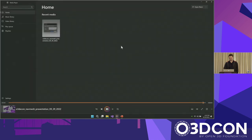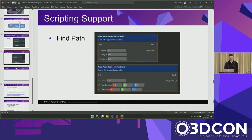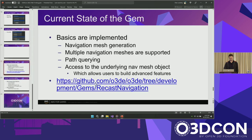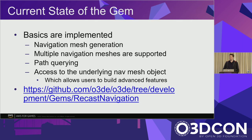That's it for the demo. The current implementation has basic features: navigation mesh computation, path computation, and access to the underlying Recast library object so you can build on top of it. The gem is called Recast Navigation and ships as part of the engine — when you download version 22.10 or later, you'll see the gem already there.